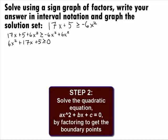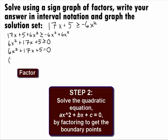In Step 2, we want to set up what we found in Step 1 as a quadratic equation and solve it by factoring to get the boundary points. The boundary points will mark off where the quadratic expression is equal to 0 — this is like the crossover point since 0 is neither positive nor negative. Our equation will be 6x squared plus 17x plus 5 equals 0. This trinomial will factor as 2x plus 5 times 3x plus 1, set equal to 0.